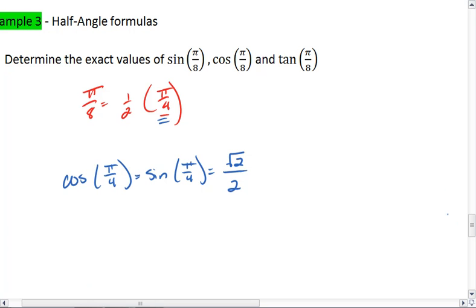Now using our formulas, we know that sine of pi over 8 equals plus or minus the square root of 1 minus cosine of pi over 4.